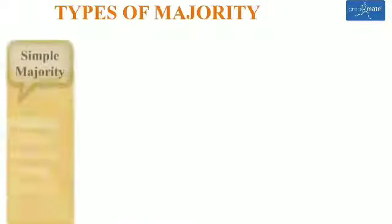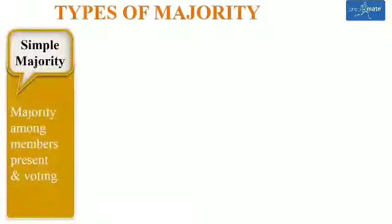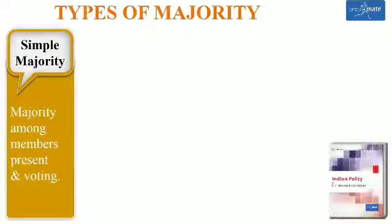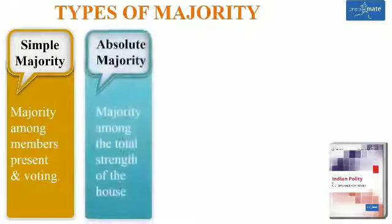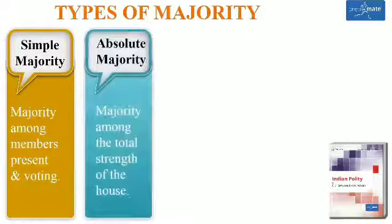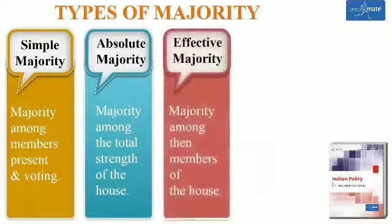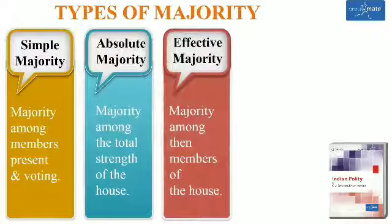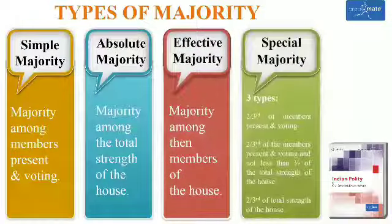Simple majority refers to majority among members present and voting. Absolute majority refers to majority among the total strength of the house. Effective majority refers to majority among then-members of the house. Special majority is of three types.